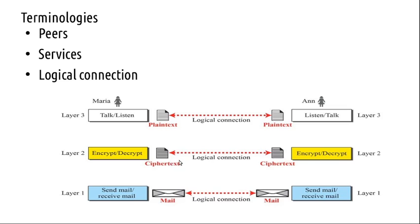For example, there might be some bits in the message set by one layer and understood only by the corresponding peer layer. It might indicate that the message has been encrypted. For the lower layer it will be just another 0 or 1. But when the message reaches that peer layer on the receiver side, it will know that the sender encrypted the message, which algorithm was used, and it will decrypt it. So there is a logical connection between these two layers, even though there is no direct physical connection between them — the physical connection exists only at the lowest layers.